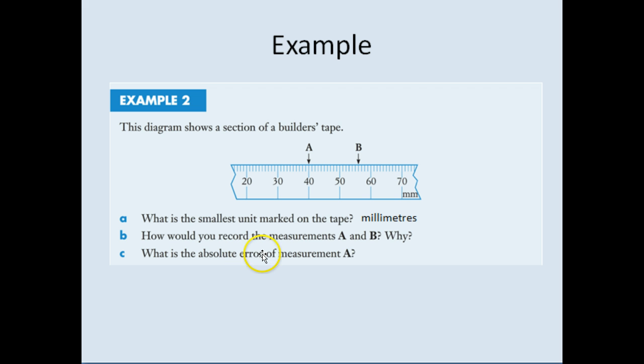Okay, how would you record measurements A and B and why? The first one here, we've got A, it is pointing at 40 millimeters. Now if this was a little bit to the right or left but still close enough, I would still say that it was 40 millimeters because I'd be rounding up or rounding down. When I'm looking at this one at B, it's 51, 2, 3, 4, 5, 6, so 56 millimeters.